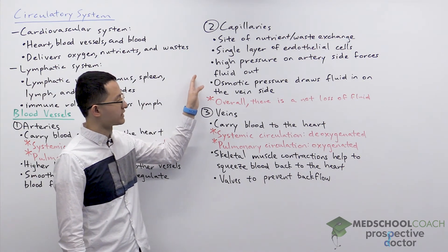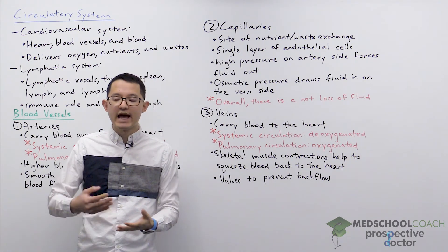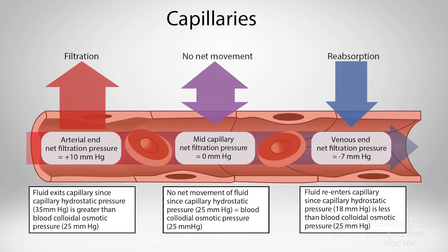What happens at the capillaries is a little complicated, but we can see how it works in this diagram. There is a difference between what happens at the artery side and the vein side of capillaries. At the artery side, the blood is under high pressure because it's pumped from the heart, and this high pressure forces fluid out. So at the artery side there is a loss of fluid, and as the blood travels through the capillaries, carbon dioxide, nutrients like glucose, and oxygen are being exchanged.